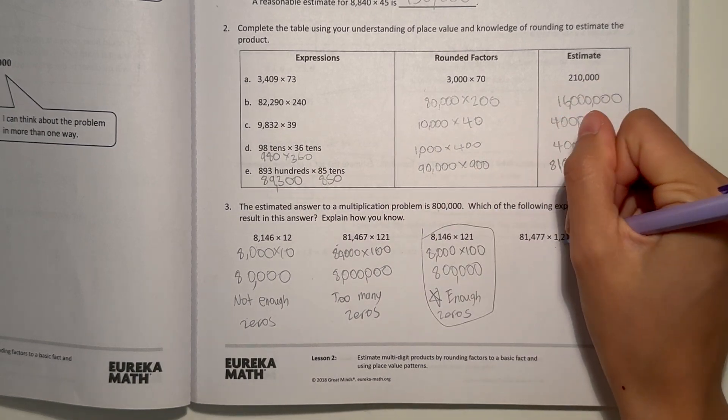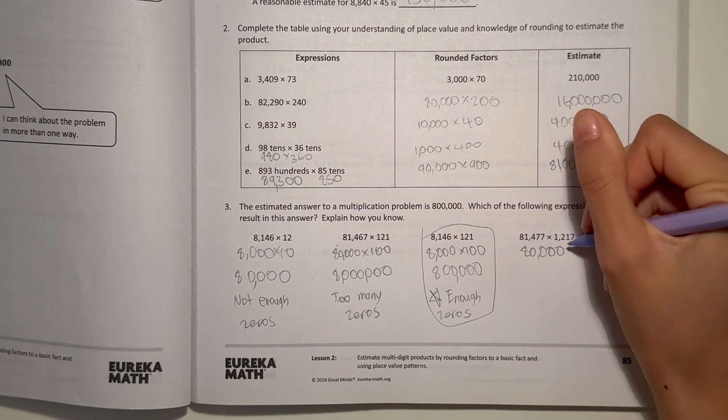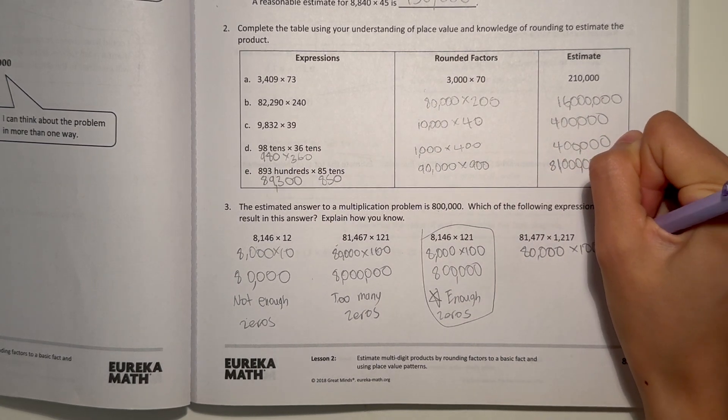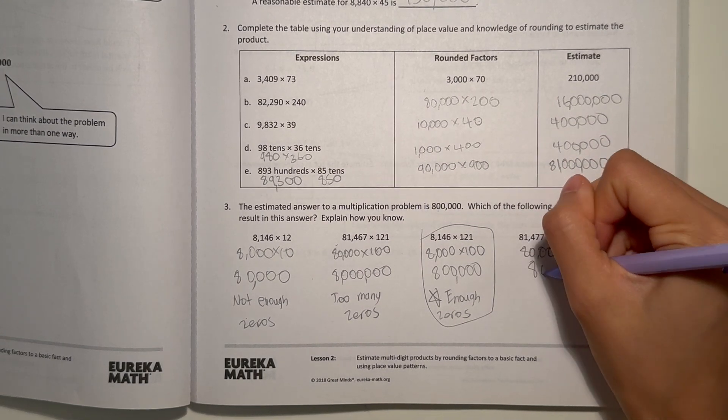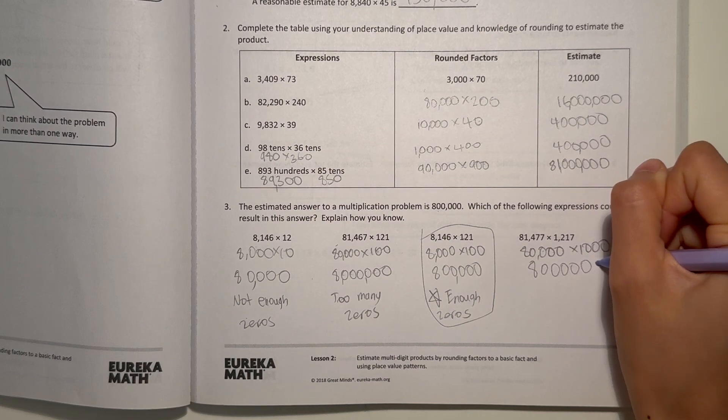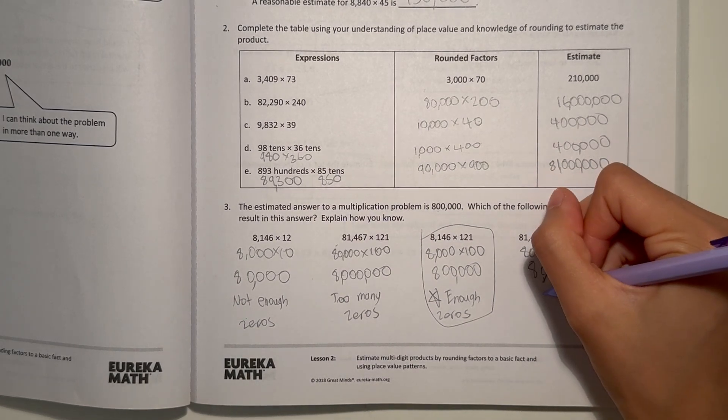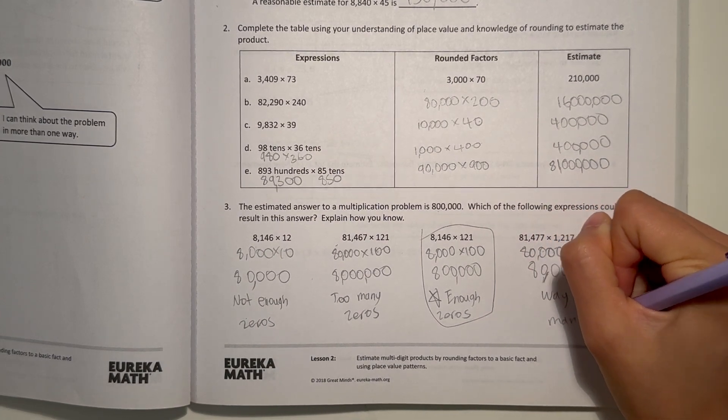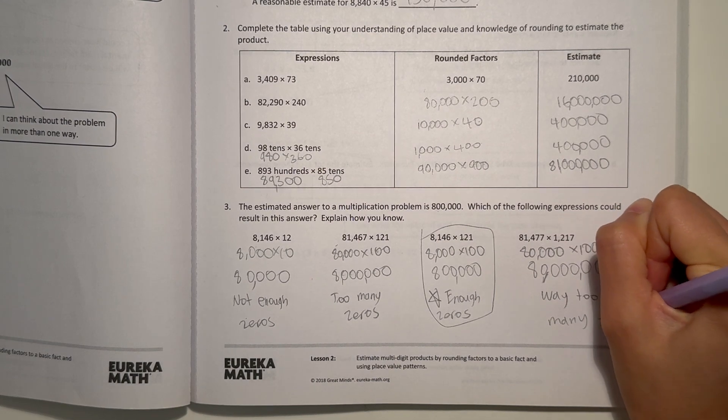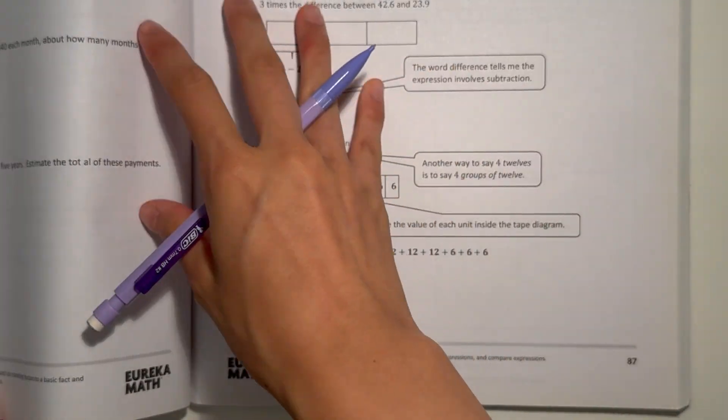But now let's just try this one. 80,000, because it rounds to 80,000 × 1,000. That's 8, 1, 2, 3, 4, 5, 6, 7 zeros. That's 80,000,000. So that is definitely way too much. Way too many zeros.